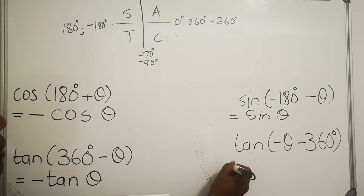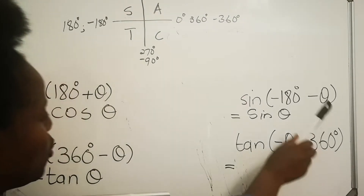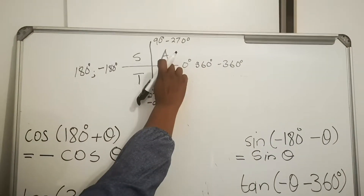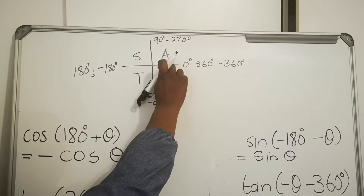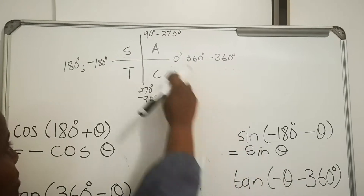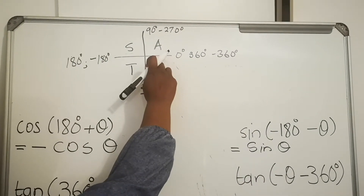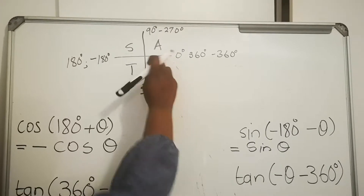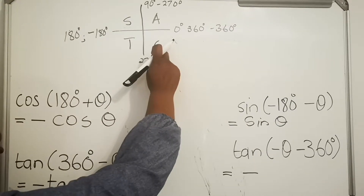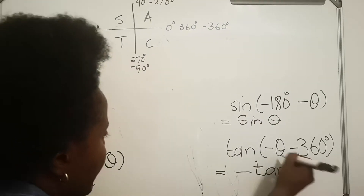Now let's look at tan negative 360. Where is negative 360? Negative 360 is here. Going negative means I'm going to the fourth quadrant. How is tan in the fourth quadrant? Tan is negative — the only positive thing is cos. Then I write the ratio, then write my angle.